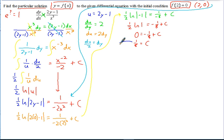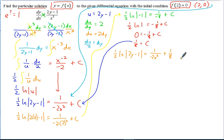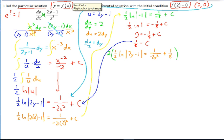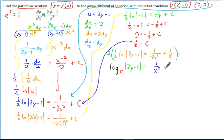Now we substitute C equals 1/8 back into our equation: 1/2 times the natural log of the absolute value of 2y minus 1 equals negative 1 over 2x squared plus 1/8. To isolate the natural log, we multiply the whole equation by 2. That gives the natural log of the absolute value of 2y minus 1 equals negative 1 over x squared plus 1/4, since 2 reduces out of the first term and 2 times 1/8 is 1/4.